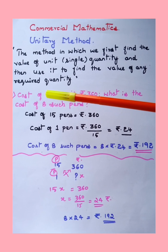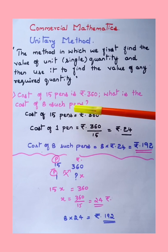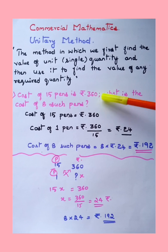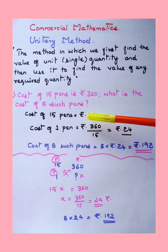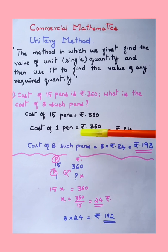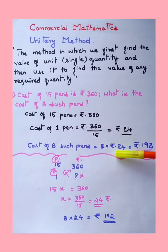Let us move into the sum. Cost of 15 pens is rupees 360. What is the cost of eight such pens? To calculate the cost of eight pens, let us first find the cost of one pen. Cost of 15 pens = rupees 360. Therefore cost of one pen = rupees 360 divided by 15 = rupees 24. Therefore cost of eight pens = 8 × 24 = rupees 192.